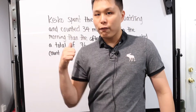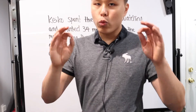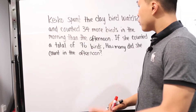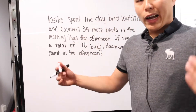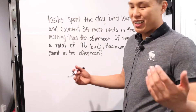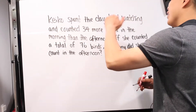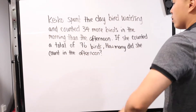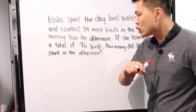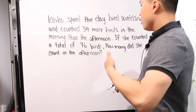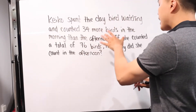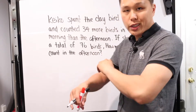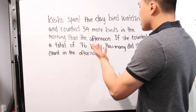So let's begin with the first question — a standard word problem. Write your equation and solve. Keiko spent the day birdwatching. She counted 34 more birds in the morning than in the afternoon. If she counted a total of 76 birds, how many did she count in the afternoon? Fairly simple. Our primary focus is the afternoon — that's what we're looking for.